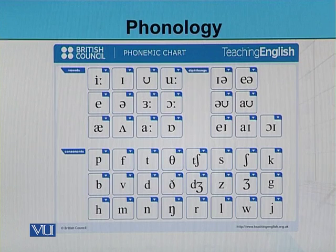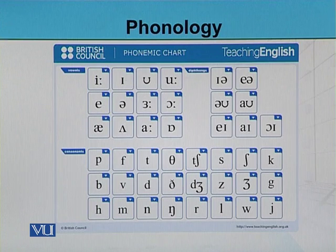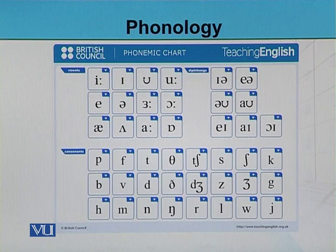Now this is called the International Phonemic Chart for English. You can find this chart at the beginning of any dictionary related to English — you can see Oxford, Cambridge, Longman — you can see it at the beginning of those pages. I am not having a full discussion on these sounds; I am just talking about phonology, which means these sounds.